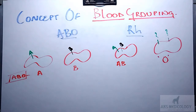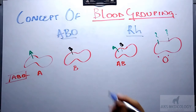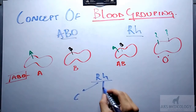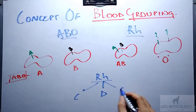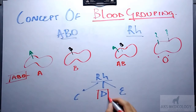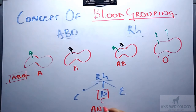Moving on to the RH blood grouping system. The RH blood grouping system consists of three antigens: C, D, and E. Out of these three, the most important is antigen D, because it is the most antigenic and is found in more than 80% of the population.